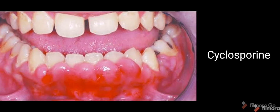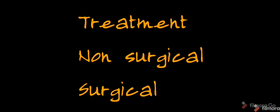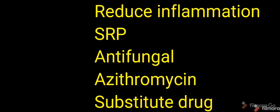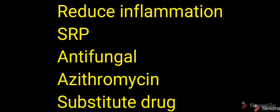Cyclosporine-induced enlargements are more hyperemic and bleed more readily when probed compared to phenobarbitone enlargements. Regarding treatment, the first approach is non-surgical. The main aim is to reduce gingival enlargement by controlling inflammation — removing plaque through scaling and root planing. If non-surgical management does not resolve the condition, surgical management is considered.